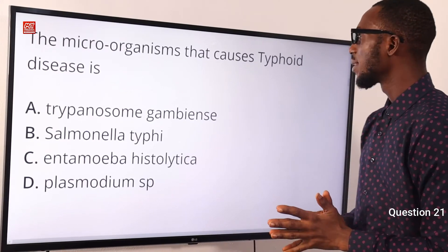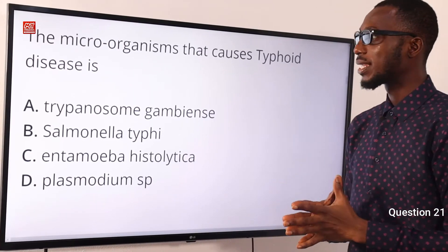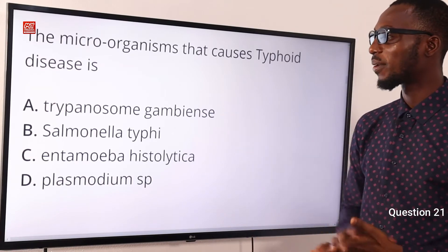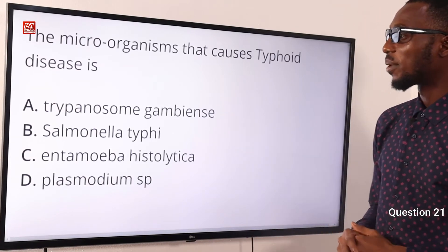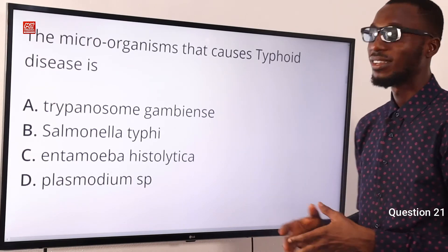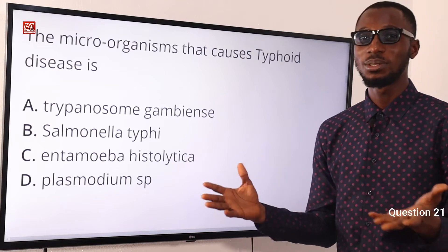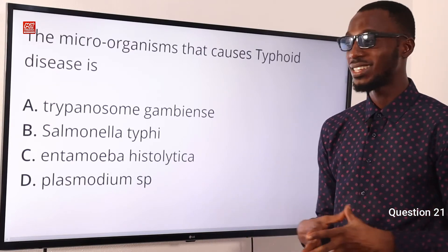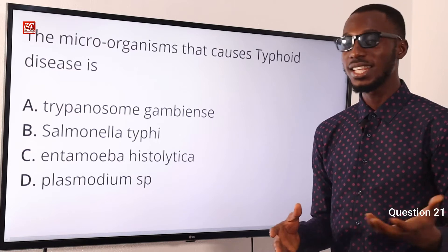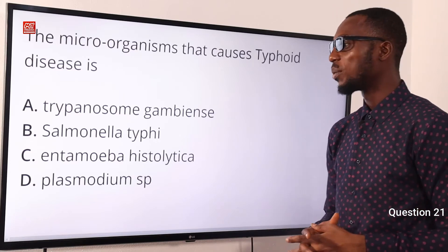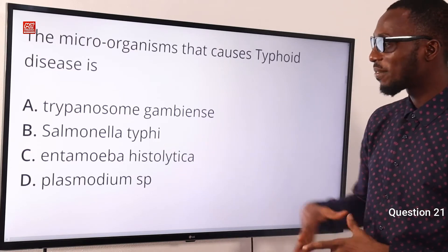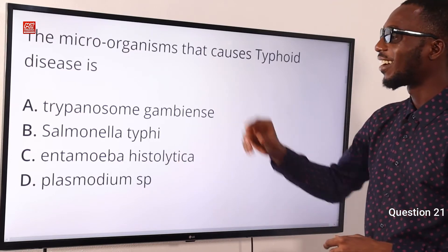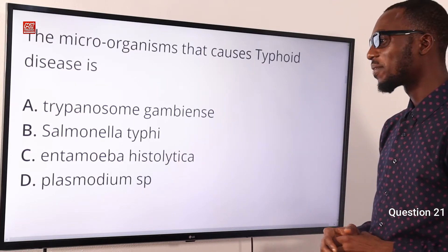The microorganism that causes typhoid disease is what? We have Trypanosoma gambiense — that is what causes African sleeping sickness, with the vector being the tsetse fly. We have Salmonella typhi — that is for typhoid, and that is the answer we are looking for.